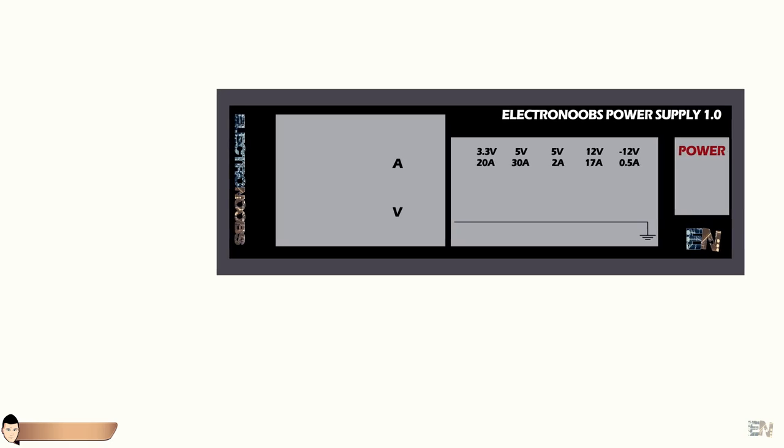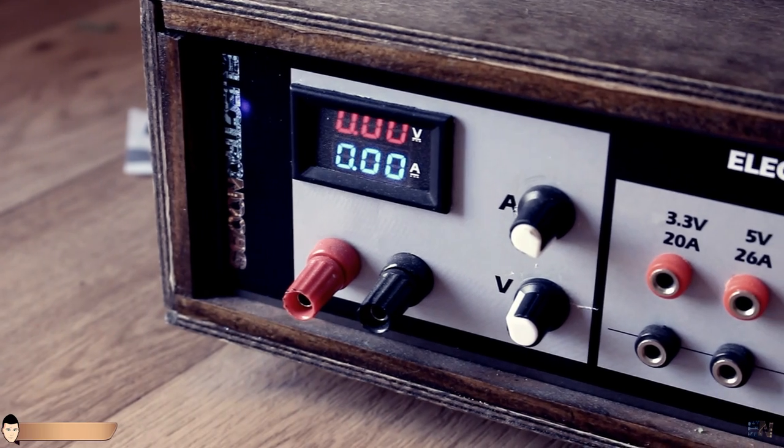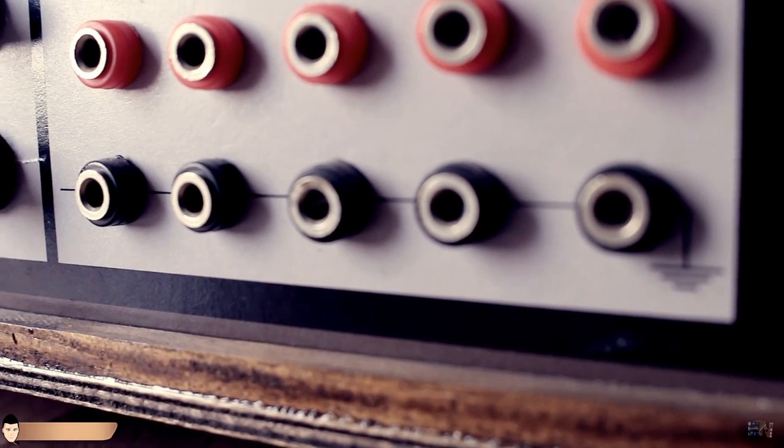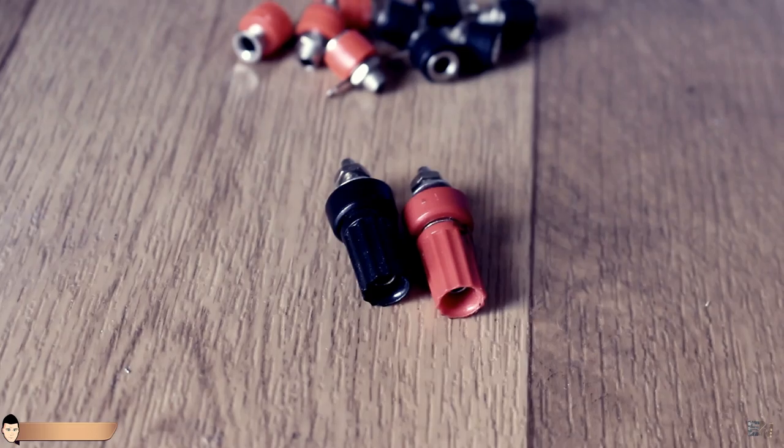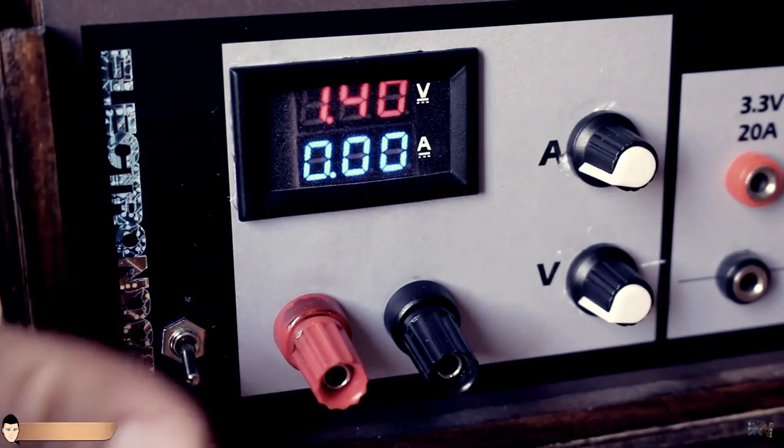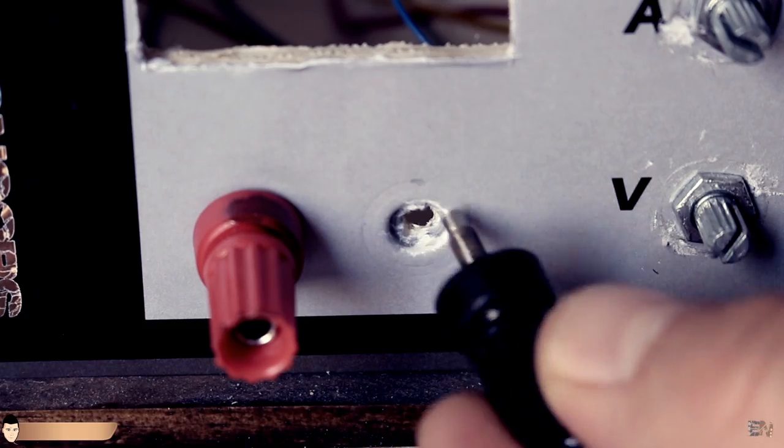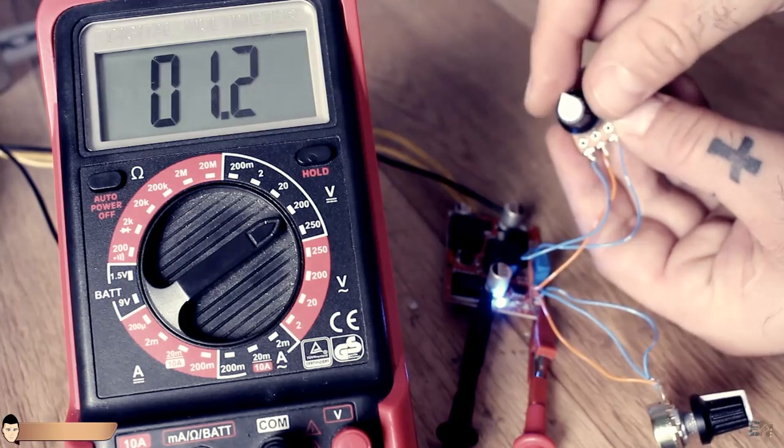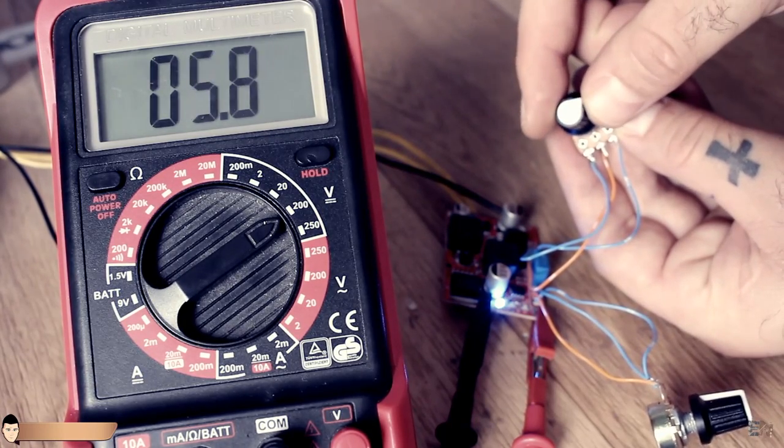I've designed and glued on the front part of the case this label to give it a nicer look. I've used these small banana connectors for the fixed value outputs and some larger connectors for the variable part of the power supply. I've drilled the holes and fit in place the connectors. Now that we have the case, let's take a look at the schematic part.